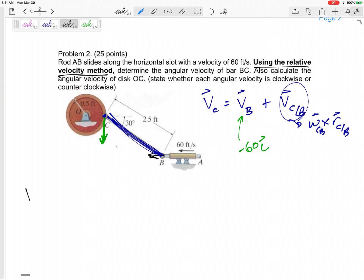So, VC. I don't know it, but go ahead and put it at its direction. Negative VC in the J equals negative 60 in the eye plus omega, which I don't know, but I know it's in the K direction. Crossed with our, let's see, I did C slash B, so that's from B to C. 2.5 the cosine 30 in the negative I direction, and then up 2.5 sine 30 in the J.